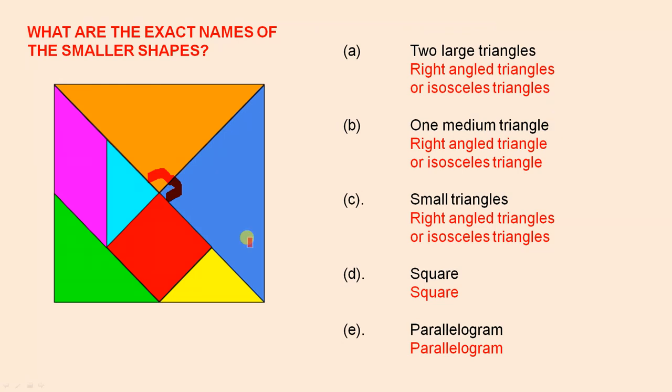There's the medium triangle, which is the green one. That is also a right angle triangle and is also an isosceles triangle because the two sides are equal.